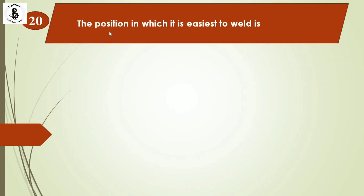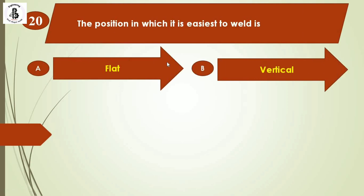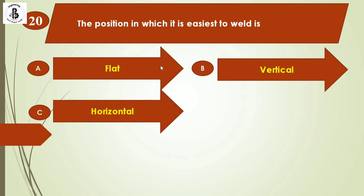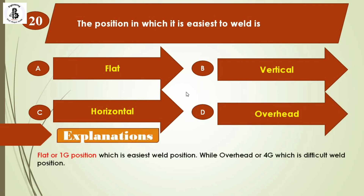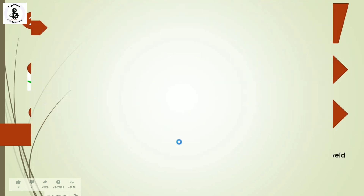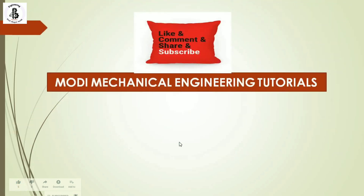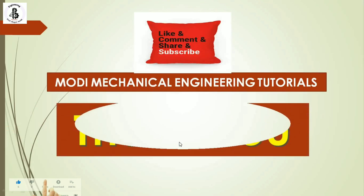Question 19: The position in which it is easiest to weld is — option A: flat, option B: vertical, option C: horizontal, option D: overhead. The flat position, also called 1G, is the easiest welding position, while the overhead position, or 4G, has the highest difficulty level. The right answer is option A: flat position. I hope you understood this. If you like this video, please subscribe and share Modi Mechanical Engineering Tutorials. Thank you so much and keep watching.